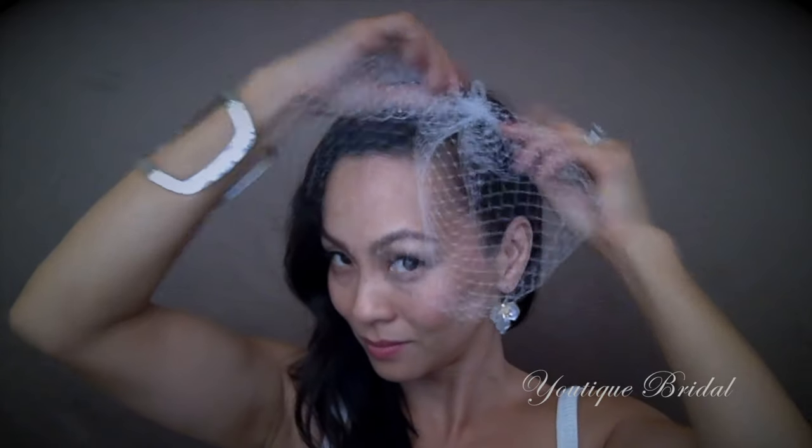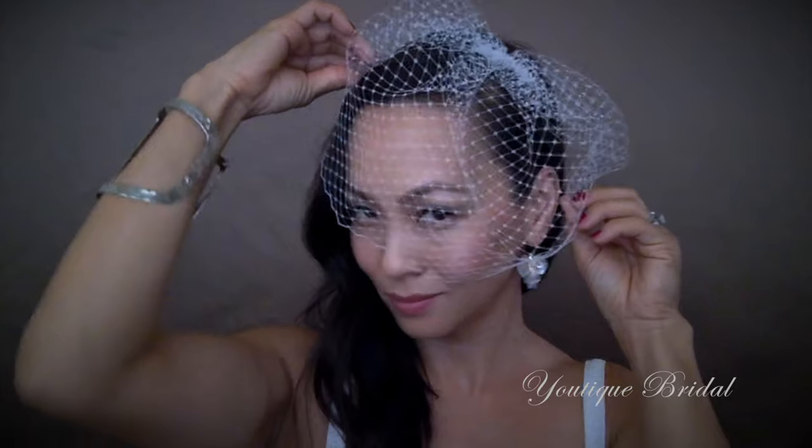I call the first one over the eye birdcage look. You're going to place the birdcage veil at an angle on your head. You can play around with it and cover one eye, or here I'm just going to cover two eyes. And then place the hair pins to hold it in place.